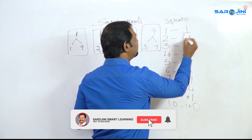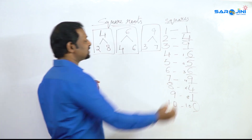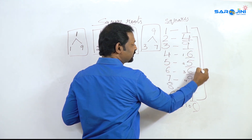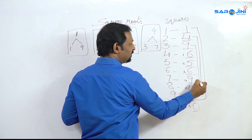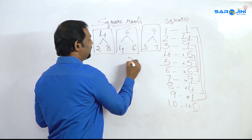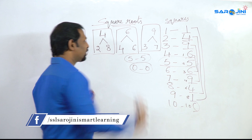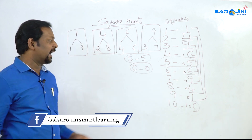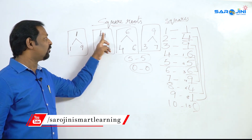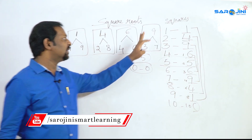So looking at unit digits: 1 appears here and here; 4 appears here and here; 9 appears here and here; 6 appears here. 5 will remain 5 and 0 will remain 0. So 1 is the unit digit for 1 and 9; 4 is for 2 and 8; 6 is for 4 and 6; 9 is for 3 and 7. These are the basic points you have to know.